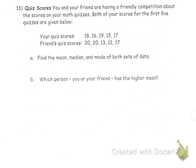18, 16, 19, 15, and 17 are your quiz scores, so let's hope that's out of 20 and not a percent. Your friend's quiz scores are 20, 20, 13, 12, and 17.